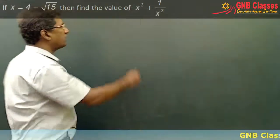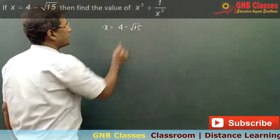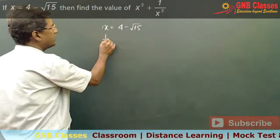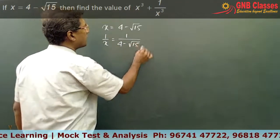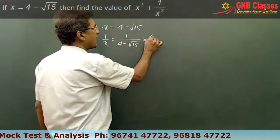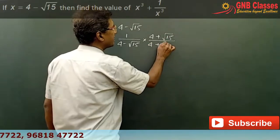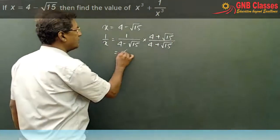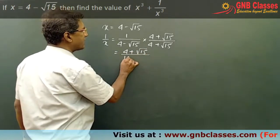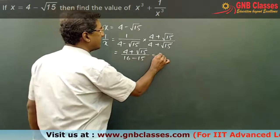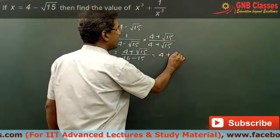In this problem, we are given x = 4 − √15. From here, 1/x = 1/(4 − √15). Rationalizing by multiplying numerator and denominator by its conjugate, we get (4 + √15) divided by (16 − 15), which equals 1. So 1/x = 4 + √15.